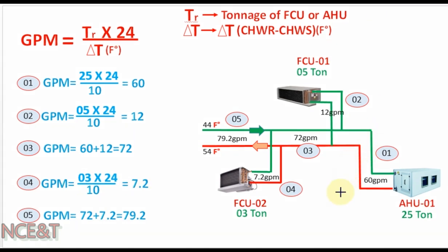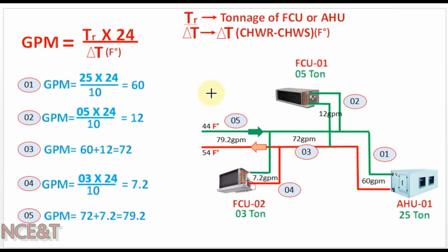The GPM at pipe segment 3 will equal the sum of GPM for the FCUs and AHU before it — in this case GPM of FCU1 plus GPM of AHU1 — equal to 60 + 12 = 72 GPM. Similarly, the GPM at segment 5 will equal GPM of FCU1 + FCU2 + AHU1 = 60 + 12 + 7.2 = 79.2 GPM.